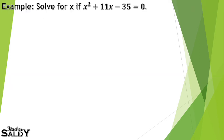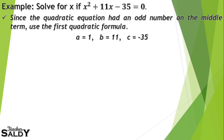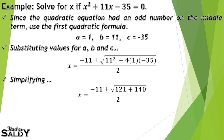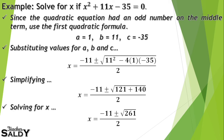Example 1: Solve for x if x² + 11x - 35 = 0. Since the middle term 11 is an odd number, we use the first quadratic formula with a = 1, b = 11, and c = -35. Substituting: x = (-11 ± √(11² - 4·1·(-35))) / 2 = (-11 ± √(121 + 140)) / 2 = (-11 ± √261) / 2. That is our final answer.